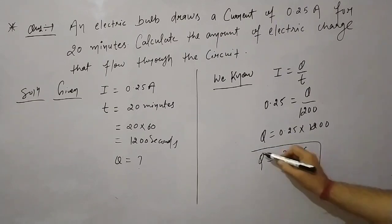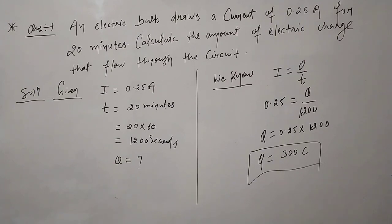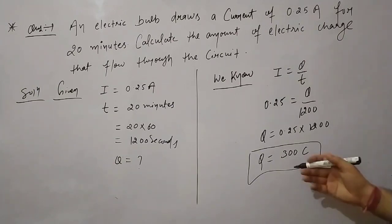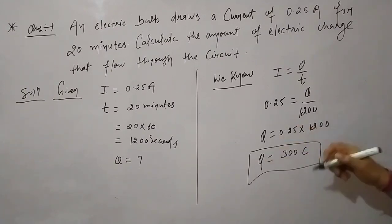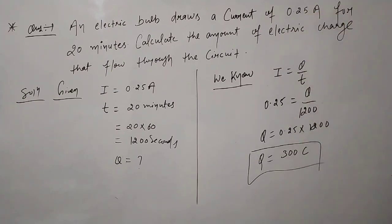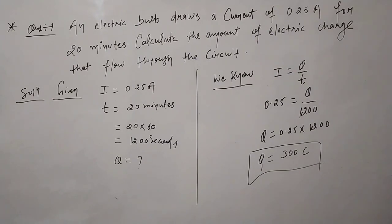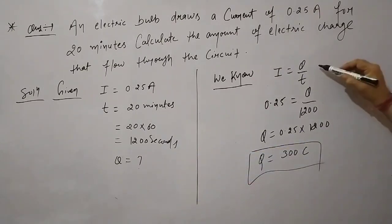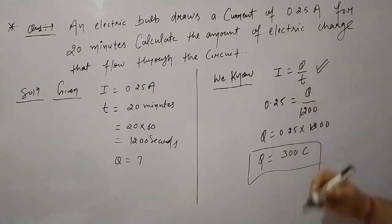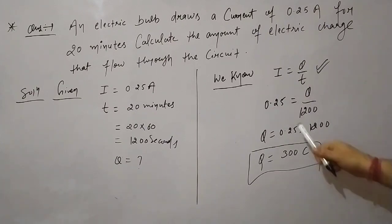What is the definition of electric current? Electric current is the amount of electric charge passing through a given point of a conductor in one second. Suppose we have a conductor like silver, copper, or aluminum — when electrons pass through a particular point, there is current flow. The flow of charge per second in a conductor is known as electric current.